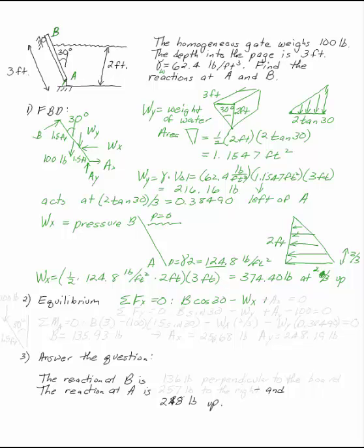The sum of the forces in y is B sine 30 minus W y plus A y minus 100, don't forget the weight, equals 0.